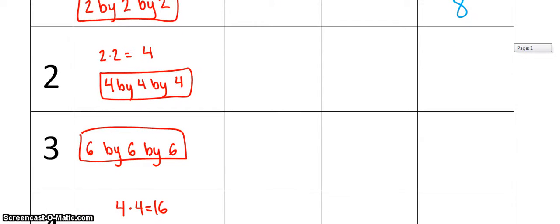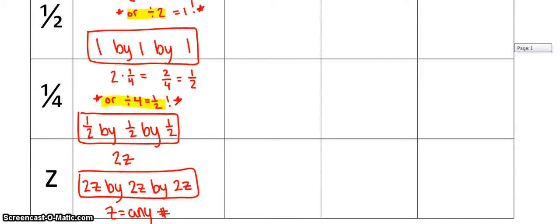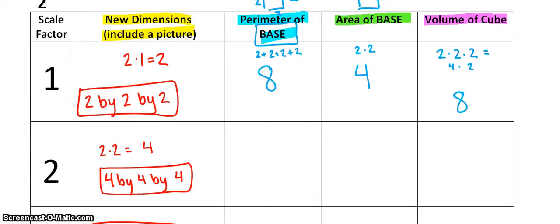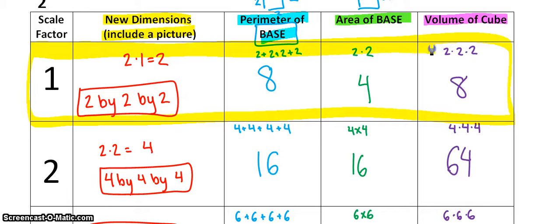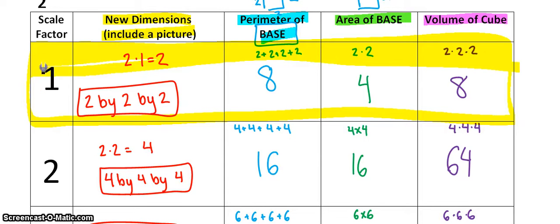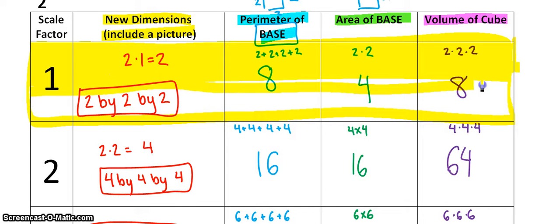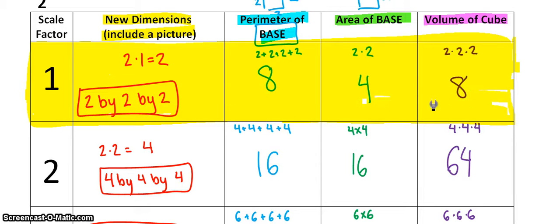Now I want you to go ahead and practice this for scale by 2, scale by 3, scale by 4, a half, a fourth, and z. Fill out the rest of this chart and then I'll come back and we'll figure out exactly what these relationships mean. You should have all of the chart filled out. Scale factor 1 defines our original cube — dimensions still 2 by 2 by 2, perimeter of the base is 8, area of the base is 4, and volume is 8. Every row after this gives us dimensions of our shape once it has been scaled.